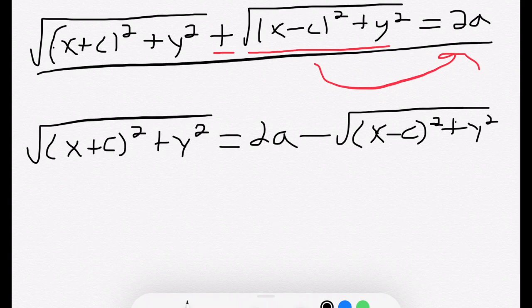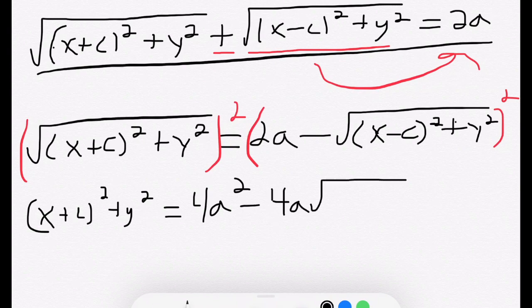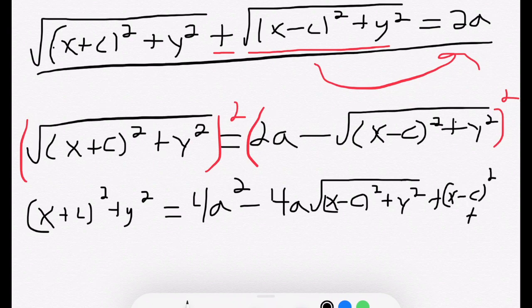Now what we're going to have to do is square both sides. Squaring both sides is thankfully going to get rid of one of the square roots that we're dealing with, so that's going to give me x plus c squared plus y squared. And on the right-hand side, we're squaring a binomial, two terms, so the first term will be 4a squared. We're going to get the product of the middle two terms times two, which is minus 4a times the square root x minus c squared plus y squared. And finally, we're going to get the square root squared, so we're going to get x minus c squared plus y squared.